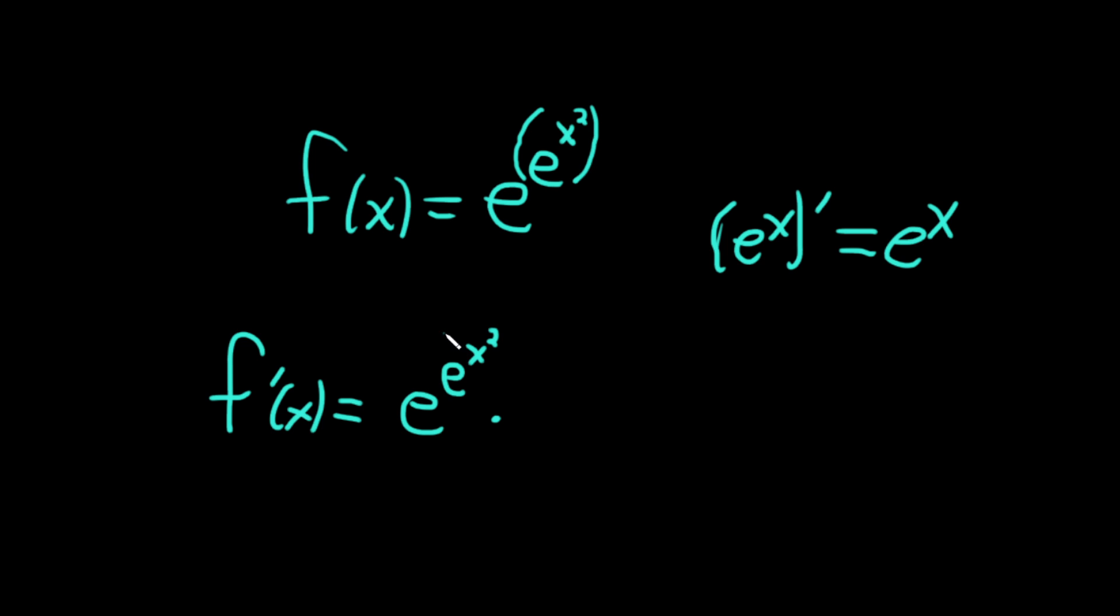Now we're going to multiply by the derivative of this inside function. So now we do it again, right? What's the derivative of e to the x squared? Well, it's e to the x squared times, well, what's the derivative of the inside function? The derivative of x squared is 2x.